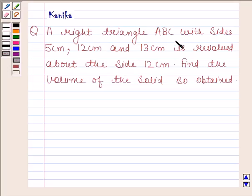The question says a right triangle ABC with sides 5 cm, 12 cm and 13 cm is revolved about the side 12 cm. Find the volume of the solid so obtained.